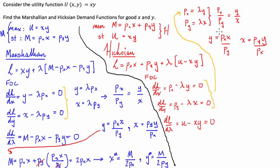It's important to notice that what we derive from the Hicksian and Marshallian FOCs is the same — that's because they are essentially the same problem, just with the objective and constraint swapped. What differs from here on out is what we substitute these expressions into. For Marshallian we subbed into the income constraint; for Hicksian demand we're going to substitute into the utility constraint.